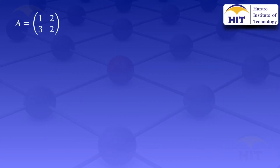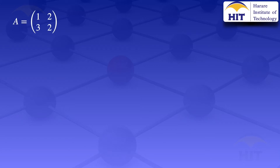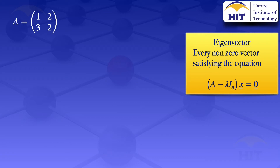I'll start by looking at the definition of an eigenvector. A non-zero vector satisfying the equation (A minus lambda I_n) multiplied by the vector x equals the zero-vector is called an eigenvector of the matrix A. Since A is a 2 by 2 matrix, I_n is the 2 by 2 identity matrix, x is a column vector with two entries, and the zero-vector is a column vector with two zeros.